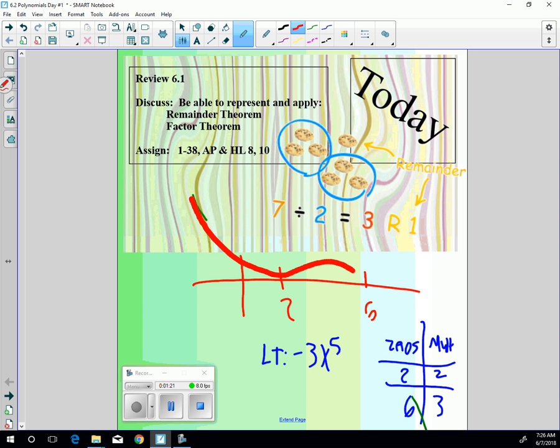And then at 2, it's going to bounce. And at 3, or at 6, it's going to go through and then go down. And there you could sketch your graph. Knowing the zeros is super helpful to be able to sketch any polynomial graph.